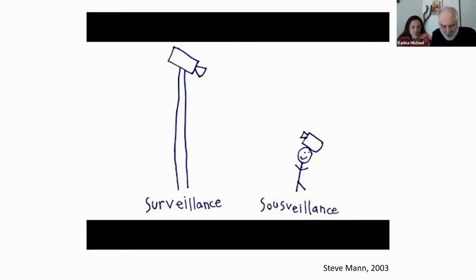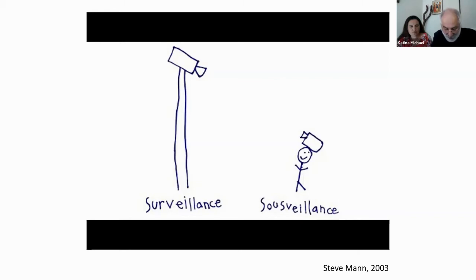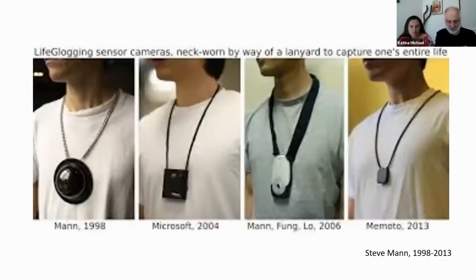Sousveillance, conceived by Steve Mann of the University of Toronto in 2002 but practised since at least 1995, is the recording of an activity from the perspective of a participant in that activity. Its initial introduction into the literature came in the inaugural publication of the Surveillance Society Journal in 2003, with a meaning of inverse surveillance as a counter to organisational surveillance. Steve Mann prefers to interpret sousveillance as undersight, which maintains integrity, contrary to surveillance as oversight, which equates to hypocrisy and where there is not an equal relationship between the observer and the observed. Whereas dataveillance is the systematic use of personal data systems in monitoring people, sousveillance is the inverse of monitoring people.